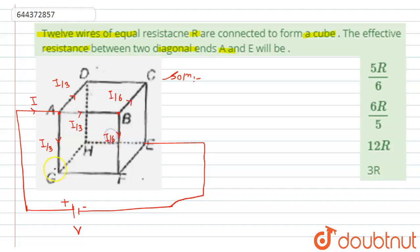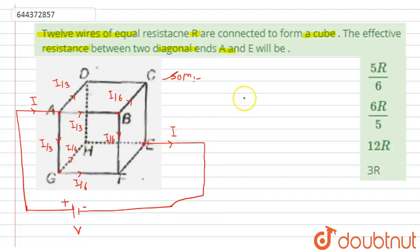Similarly, after reaching the next point, this i/3 will get divided into two parts: i/6 and i/6. After reaching point E, the current out from point E will be i.